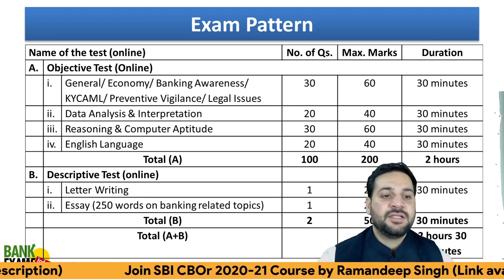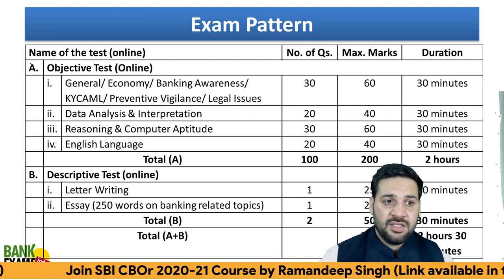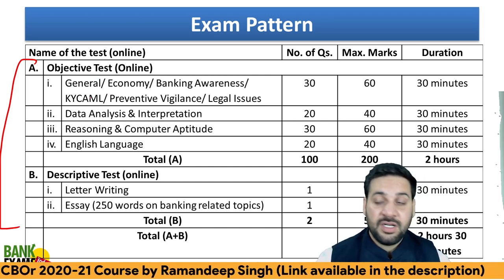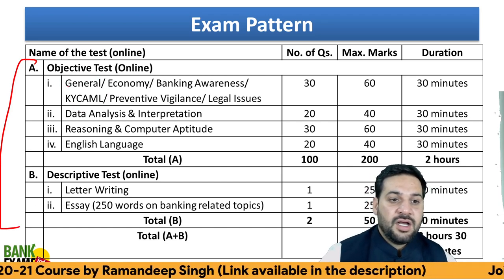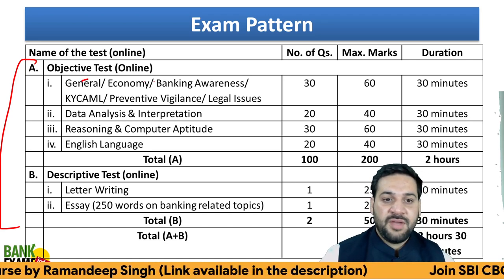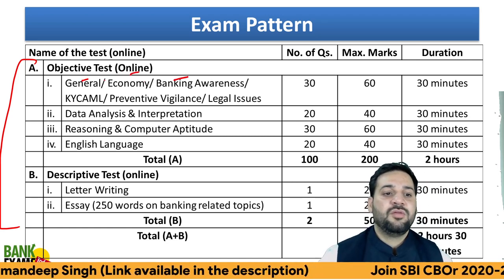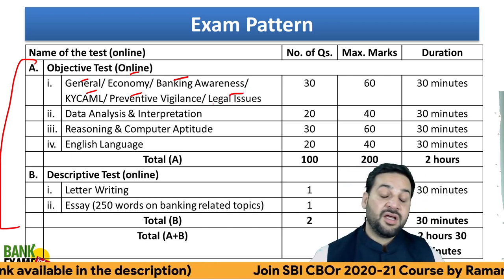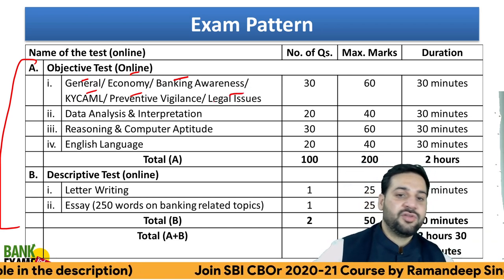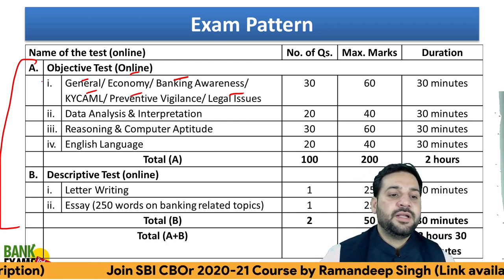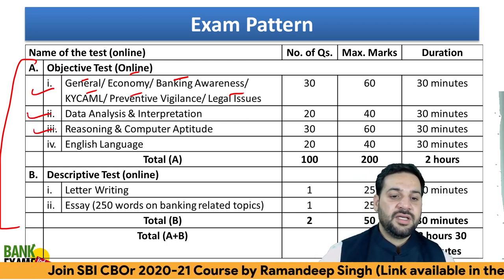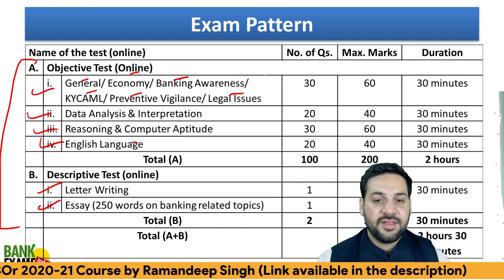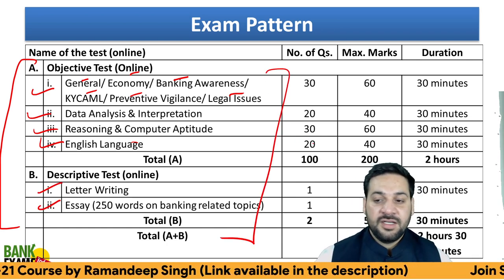So the exam pattern: there are two papers — objective and descriptive. In the objective paper, the syllabus includes general banking economy, KYC, AML, preventive vigilance, and legal issues. Some acts are also there. Data analysis, data interpretation, reasoning, computer aptitude, English language, letter writing, and essay writing — everything is part of that syllabus.